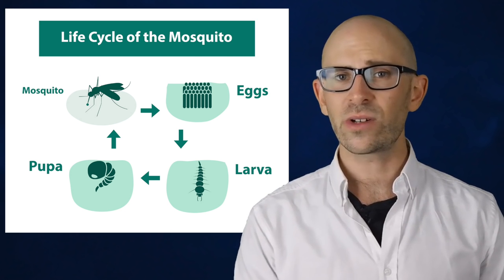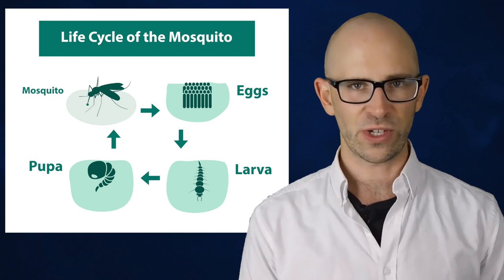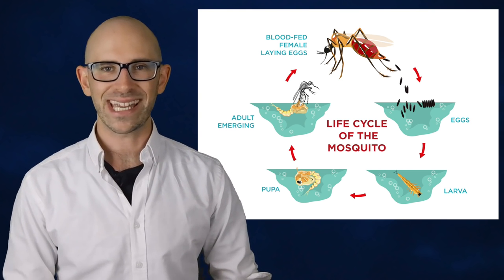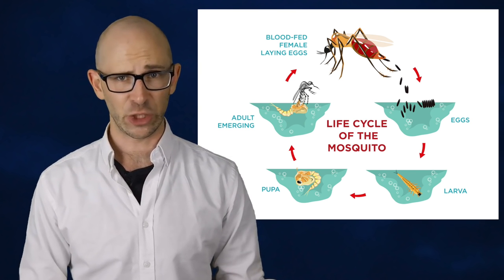During the pupal stage, they do not eat, but do sit at the surface and breathe air through two small tubes. At the end of the pupal stage, the mosquitoes crawl to a dry place to rest and dry off, with the males about ready to start mating and the females ready to start their adult lives as blood-sucking human killers.